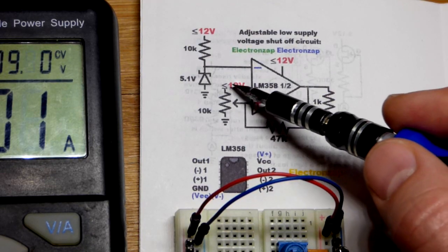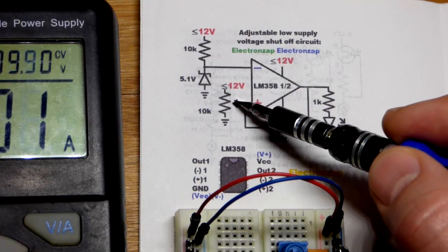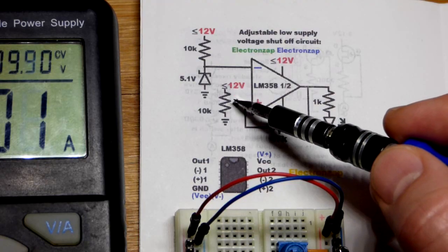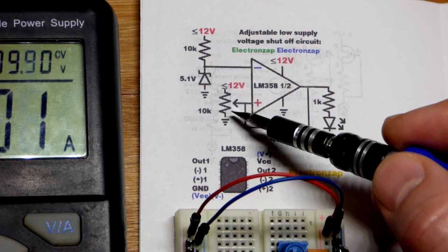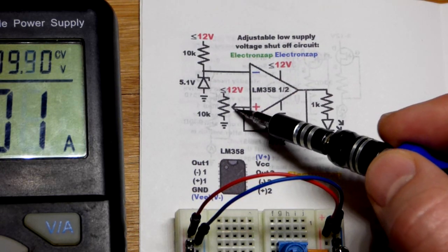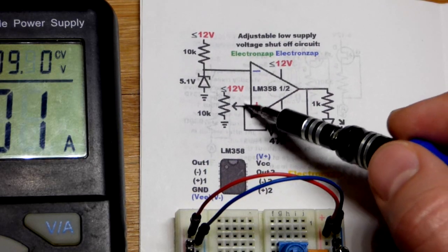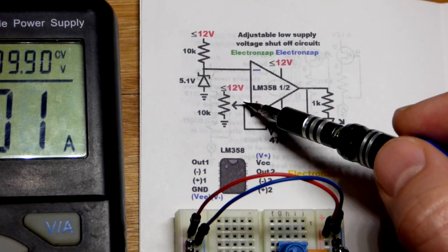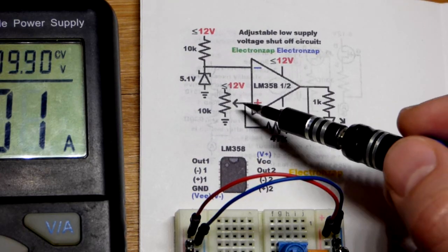If we go above that, it'll raise that above 5.1 volts. Then go below that, it'll go below 5.1 volts. Remember, we have the output here feeding some current over there.